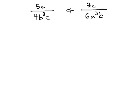In this video, we're going to identify the least common denominator of two fractions and then build those fractions up so they have a common denominator. Looking at this first example, 5a over 4b cubed c and the fraction 3c over 6a squared b, identifying the least common denominator.